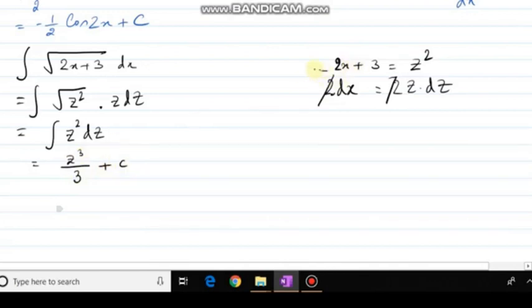Now from there, my z is 2x plus 3 whole to the power half. That is my z, right? So my z cube will be 2x plus 3 whole to the power 3 by 2 divided by 3 plus c.